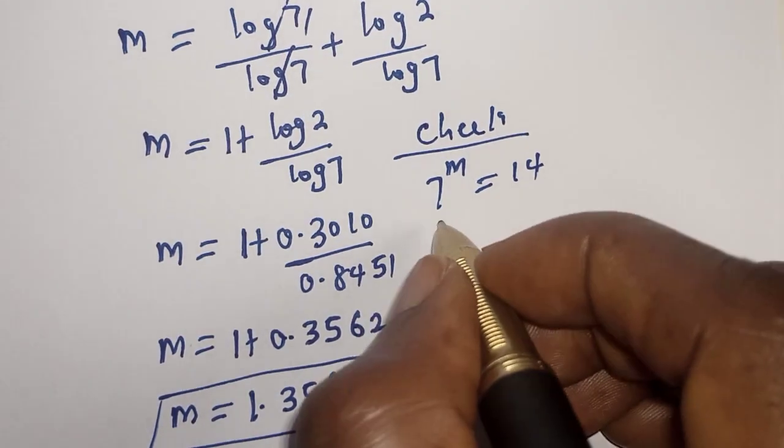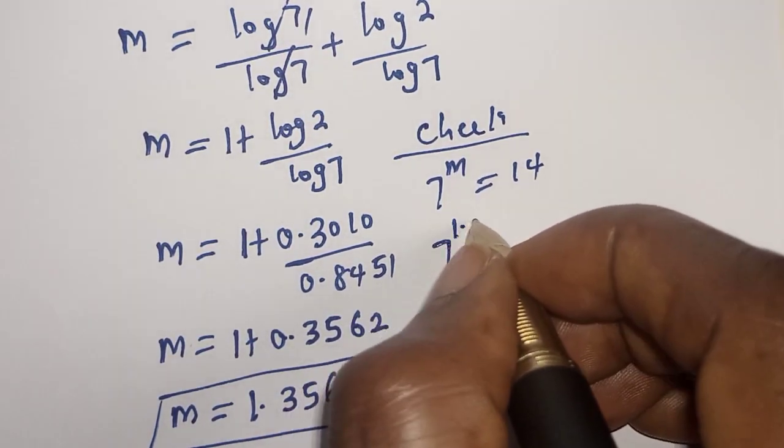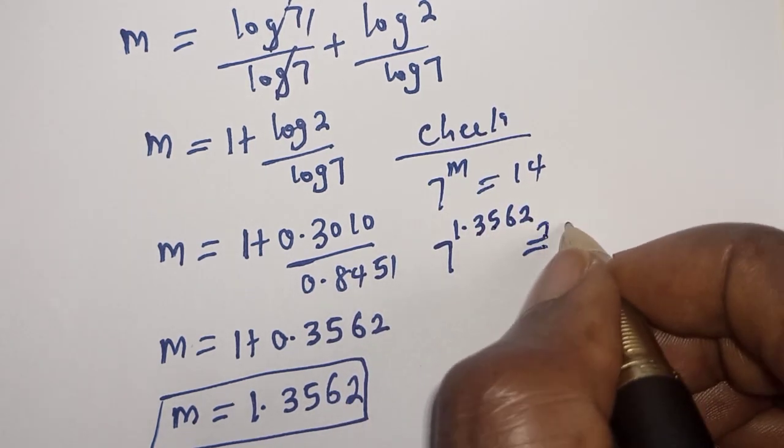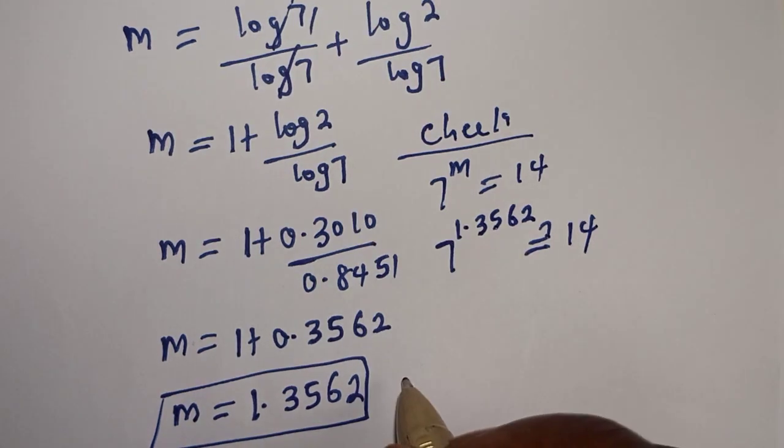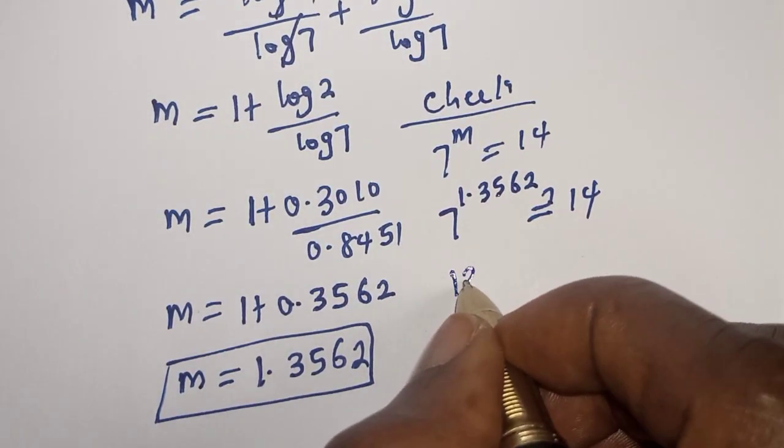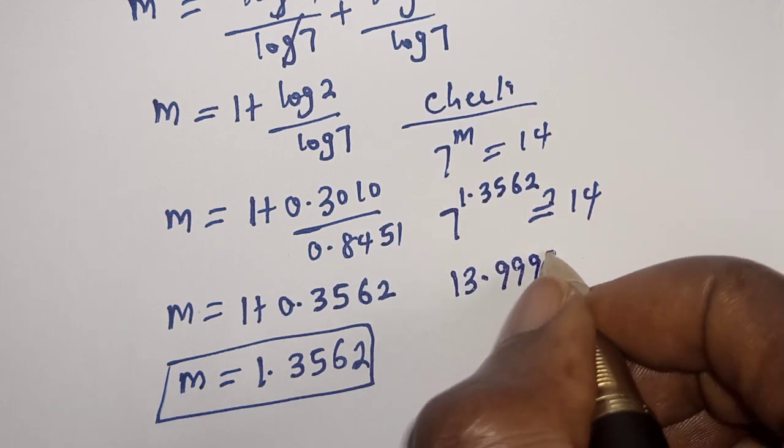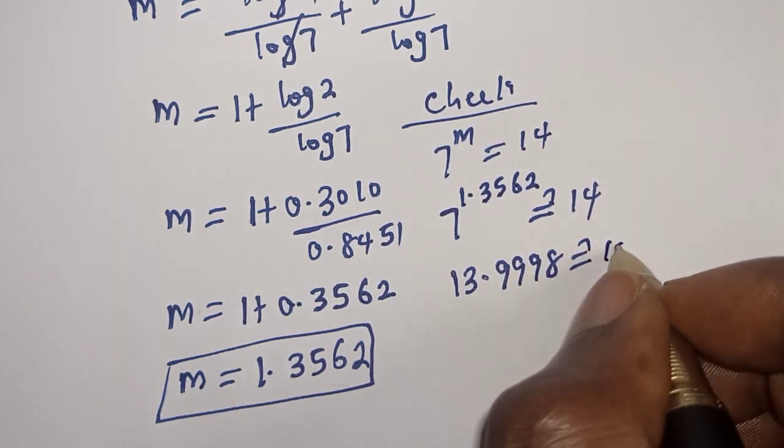Here, this is 7 raised to power 1.3562 must be equal to 14. And here is 13.9998, which must equal 14.